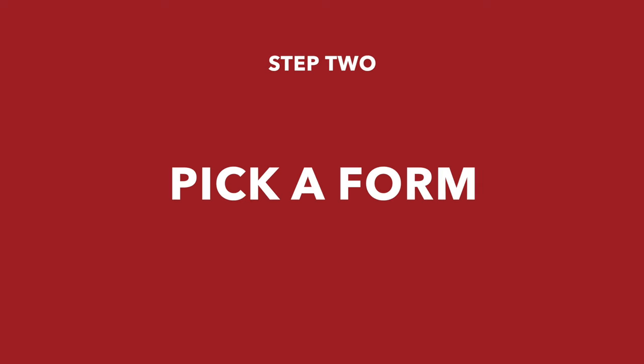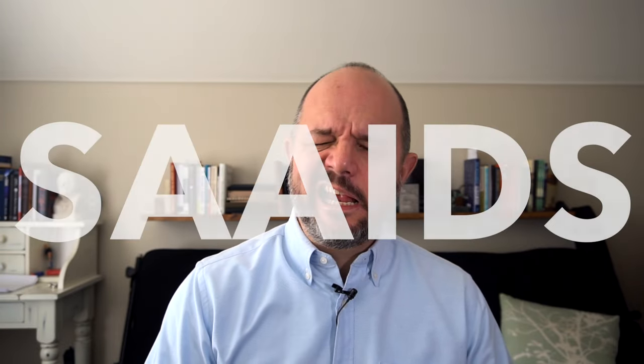Step two: pick a form. No matter what you're communicating, there are only six fundamental forms of communication — story, argument, analogy, instructions, dialogue, and summary. I've arranged them in the handy acronym SAAADS so you won't forget. If you combine these forms, you'll get the structure of everything that's ever been written. But for the purposes of explanation, we really only have to worry about two: a story and an analogy.